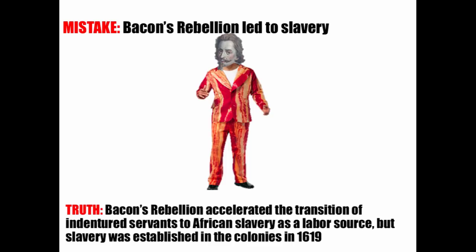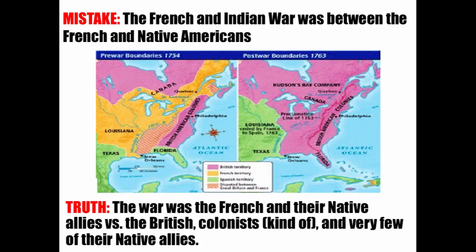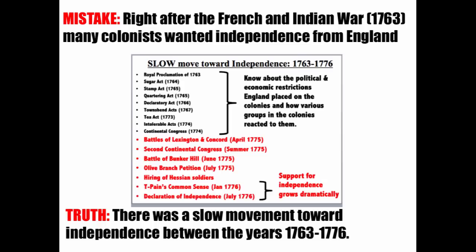Another mistake: the French and Indian War was between the French and Native Americans. The truth is the war was the French and their Native American allies versus the British, the colonists — who were reluctant to fight — and very few of their native allies. During this war, the French had most of the natives on their side.